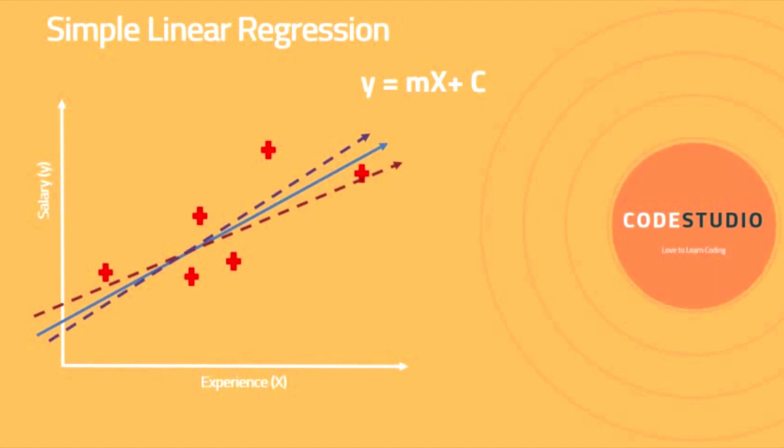The model will try to draw many lines like the scattered ones and will try to find the minimum cost function for these lines with respect to the actual observations.